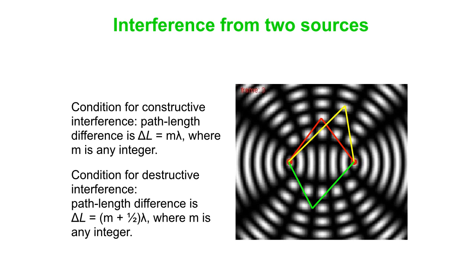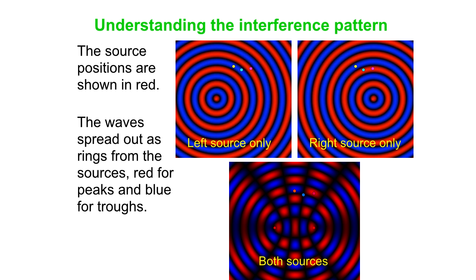The two red lines are exactly the same length — path length difference of zero. The two yellow lines have a path length difference of a single wavelength. The two green lines have a path length difference of just half a wavelength, meaning one distance is half a wavelength further than the other. You will always get destructive interference where the green ones meet, and constructive interference where the red and yellow ones meet.